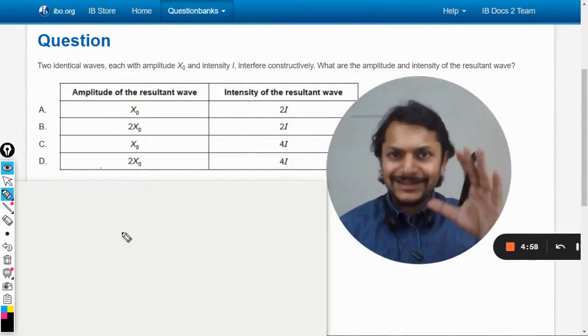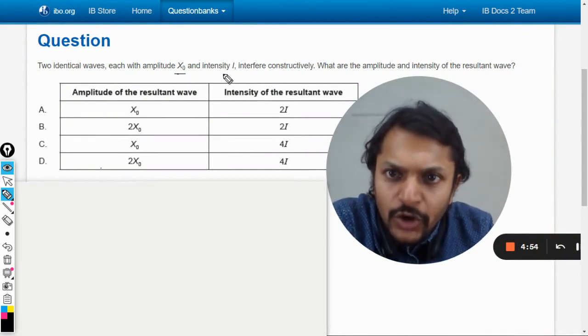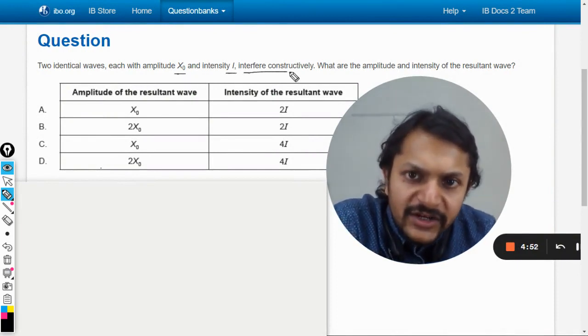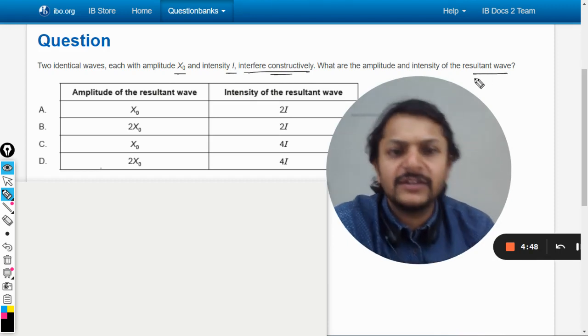Okay, dear students, let us see what is there in this question. Two identical waves, each of amplitude X0 and the intensity I, interfere constructively. What are the amplitude and intensity of the resultant wave?